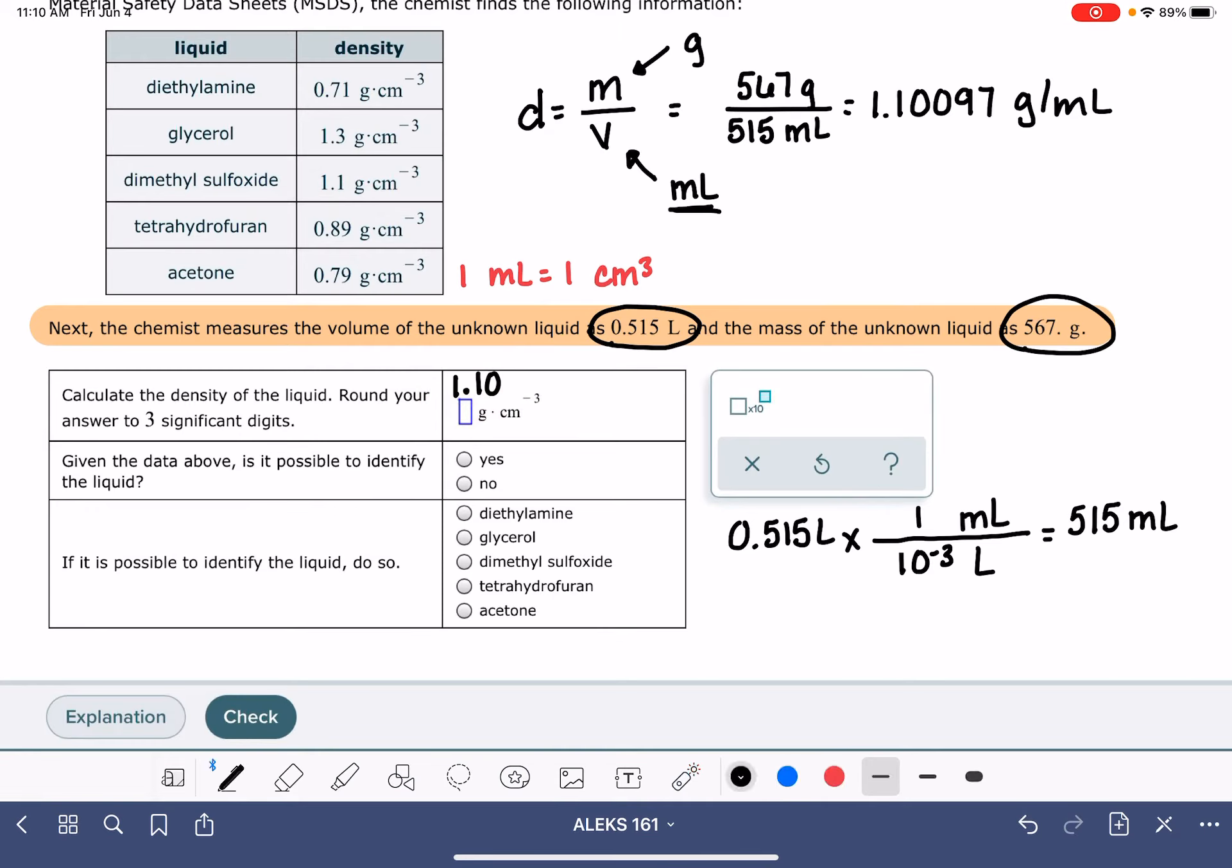So we can say here, yes, it's definitely possible to identify the liquid because we have a matching density. And the identity of the liquid is going to be dimethyl sulfoxide.